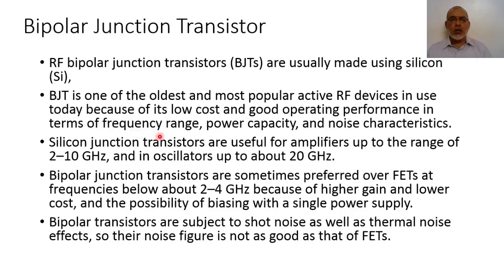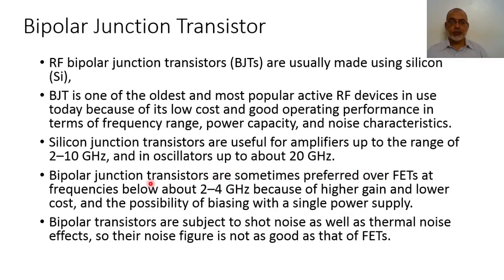Bipolar junction transistors are useful for amplifiers up to the range of 2 to 10 GHz and in oscillators up to 20 GHz. Bipolar junction transistors are sometimes preferred over field effect transistors at frequencies below about 2 to 4 GHz because they have higher gain, lower cost, and the possibility of biasing with a single power supply.